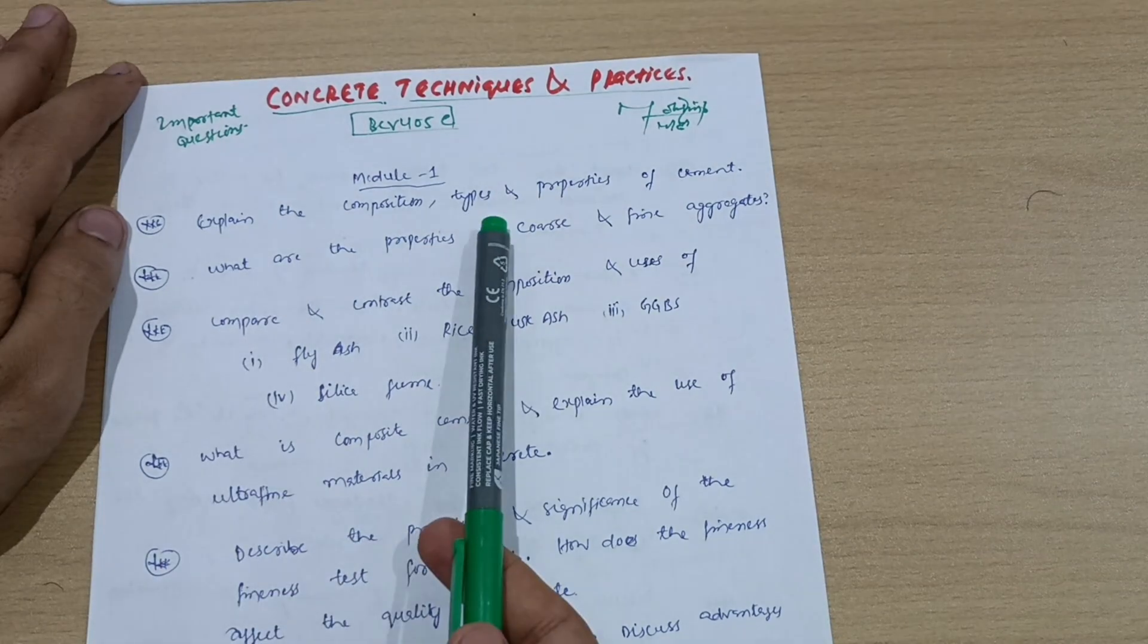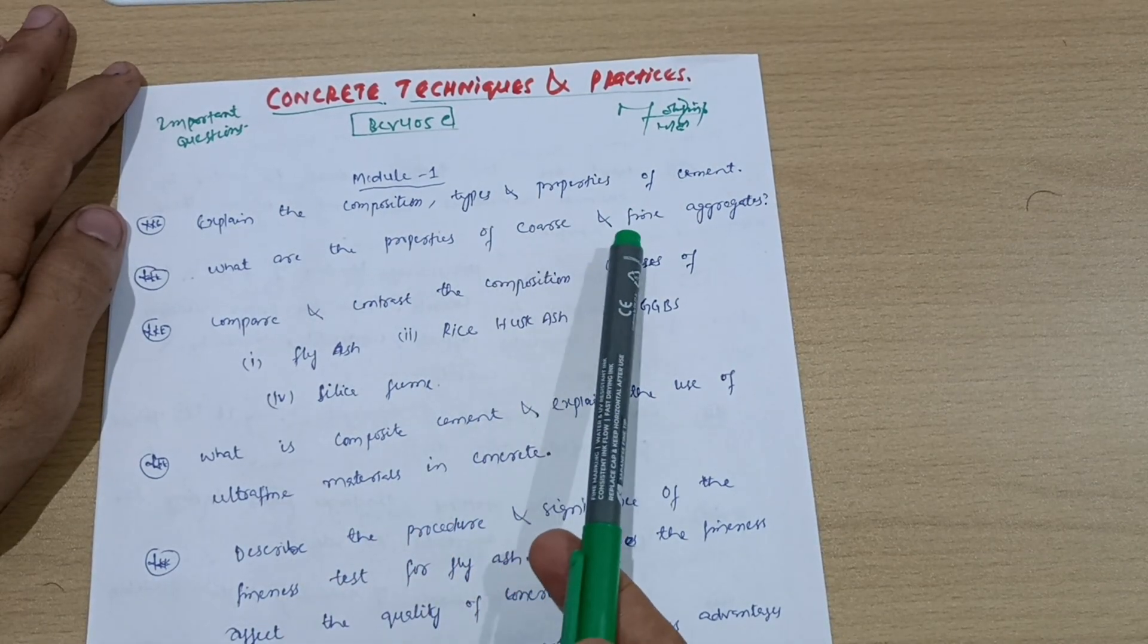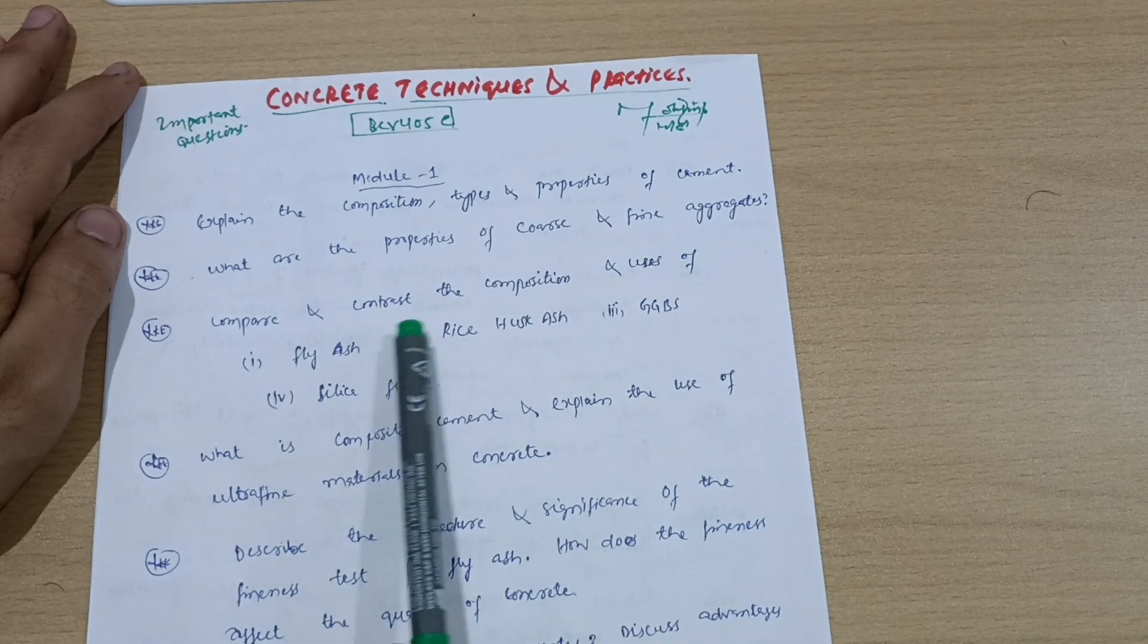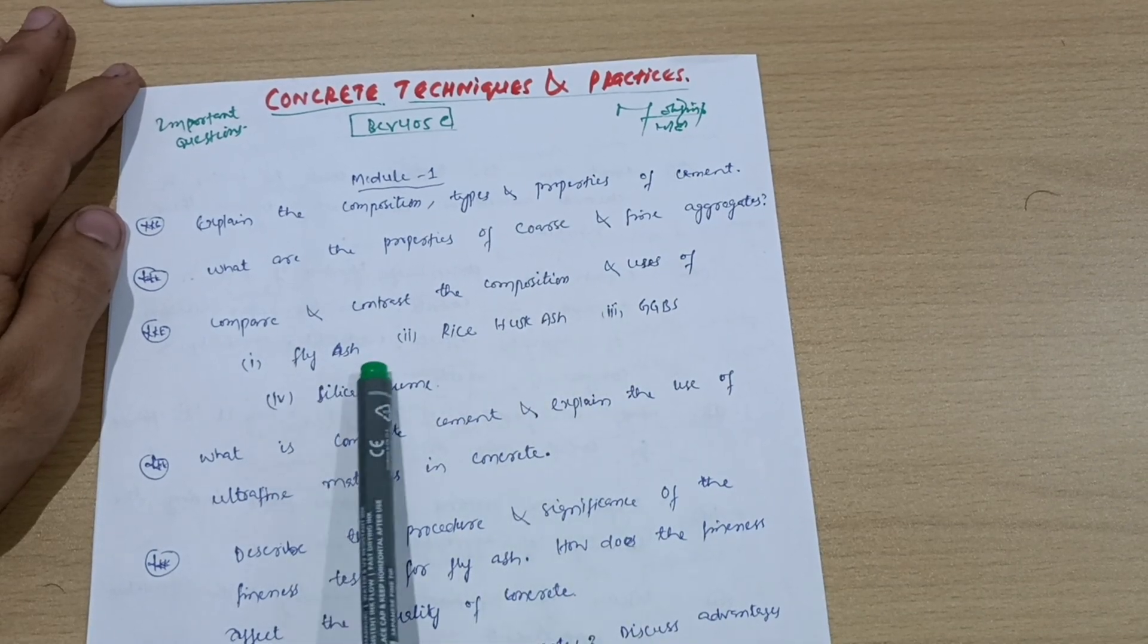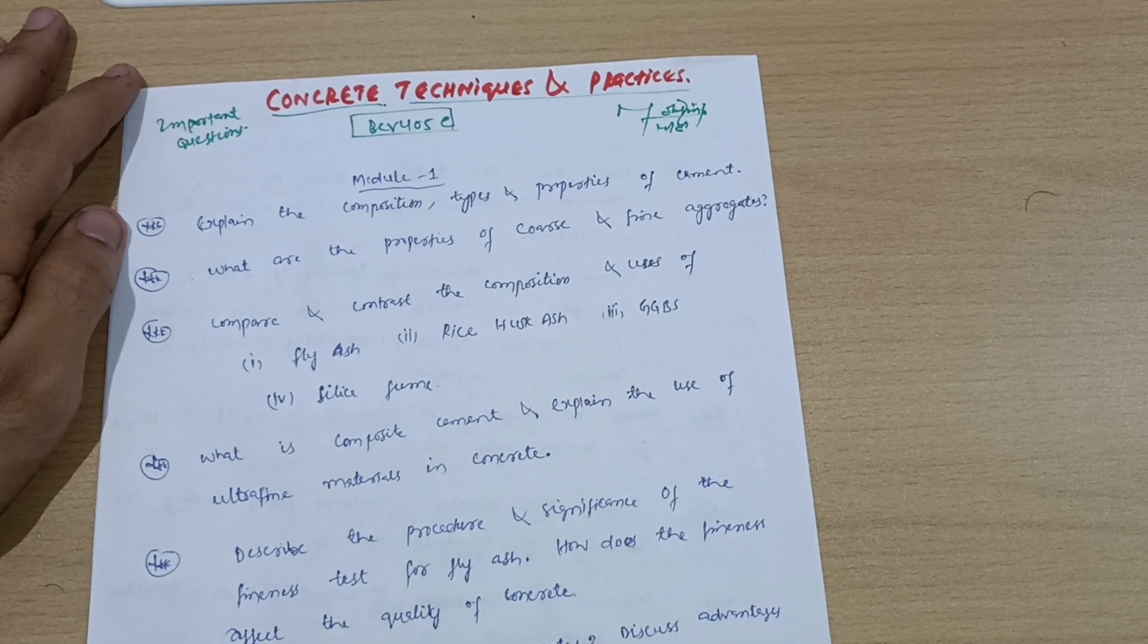Explain the composition, types, and properties of cement. What are the properties of coarse and fine aggregates? Compare and contrast the composition and uses of fly ash, rice husk ash, and GGBS silica fume.